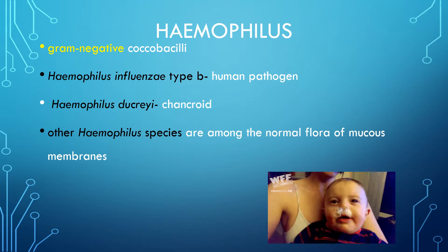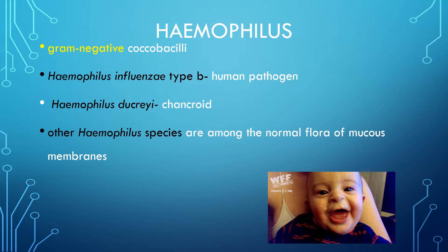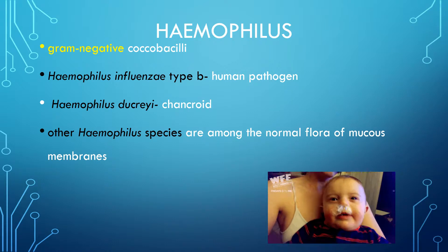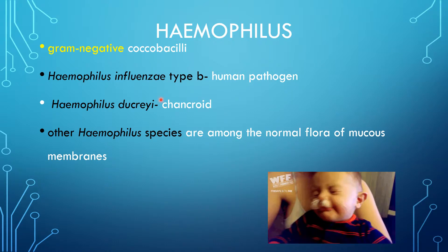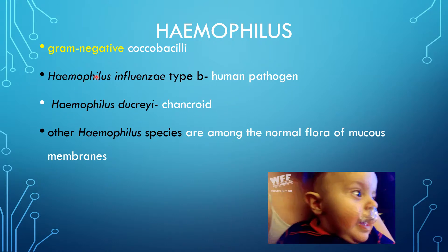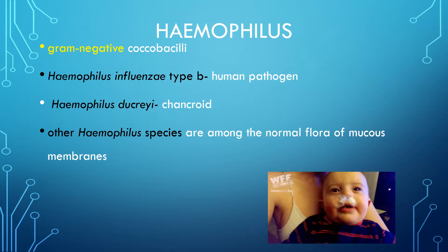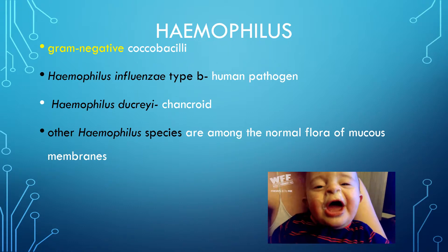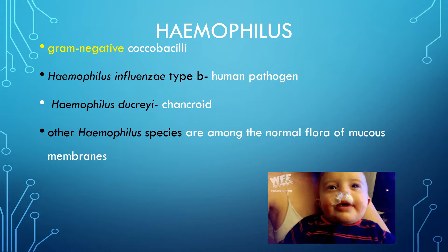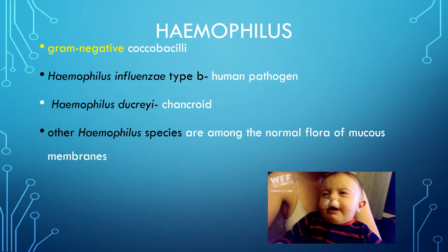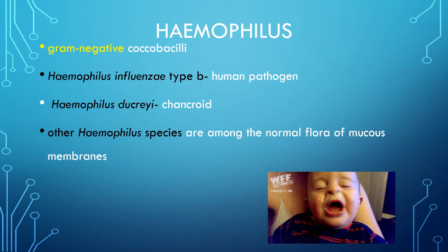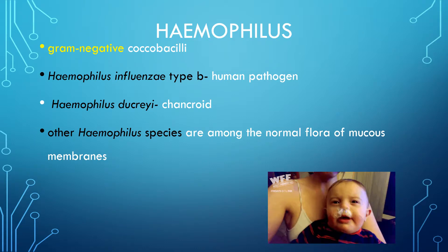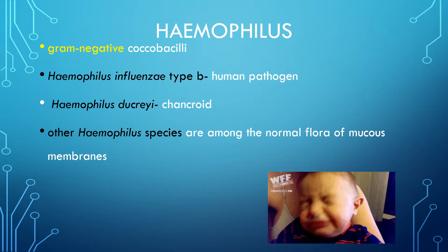Let's talk about Haemophilus. Haemophilus are gram-negative bacilli. Your Haemophilus influenzae type B is the most important human pathogen. Your Haemophilus ducreyi is the cause of chancroid, a sexually transmitted pathogen. Other Haemophilus are also among the normal flora of the mucous membranes and will occasionally cause diseases.